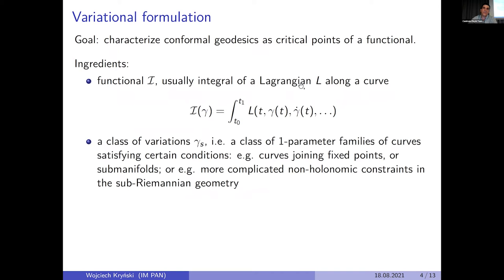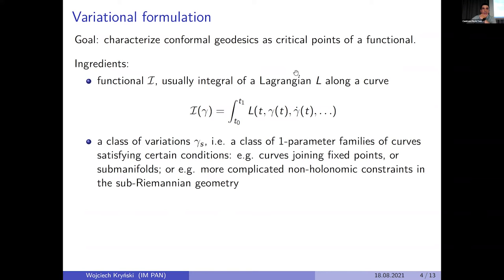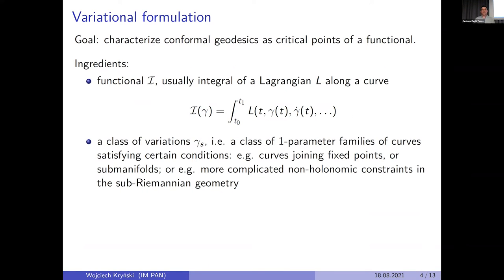Our goal is to mimic the Riemannian case, where geodesics come from a Lagrangian — when we minimize the energy or length of a curve. Here our goal is to characterize conformal geodesics as critical points of a functional. We are looking for an integral functional where we integrate the Lagrangian along a curve, and this Lagrangian L depends on time, position, velocity, and higher derivatives of the curve.